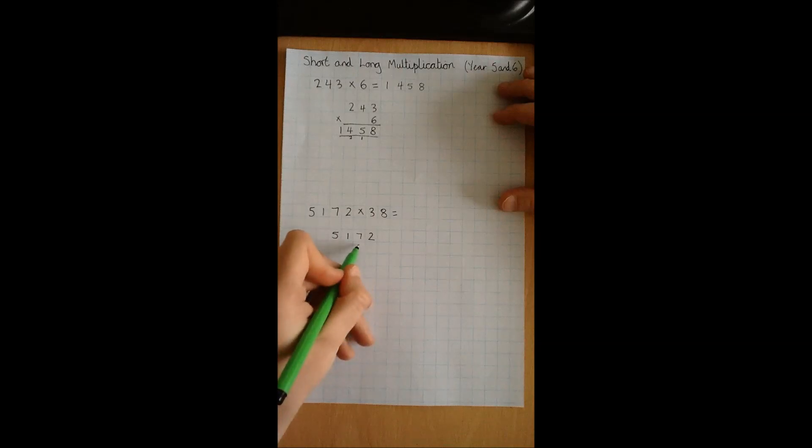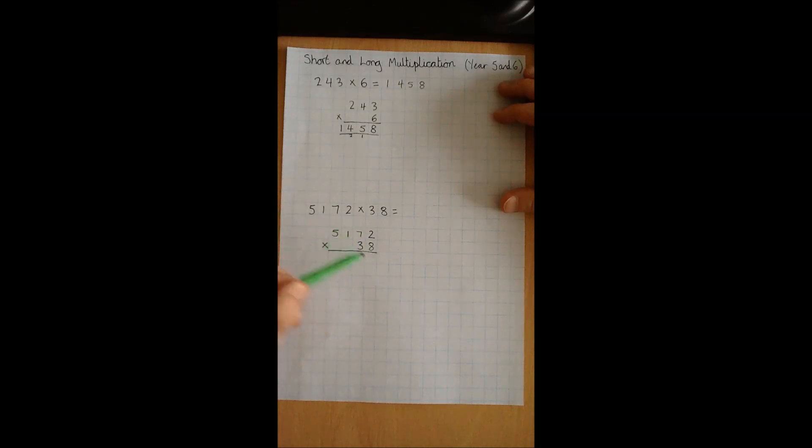So 5172, 3 in the tens and the 8 in the ones column, and making sure we put the correct symbol as well. Now this time there's an extra step because we've got 2 digits that we're multiplying by. So as before, we'll start with the 8.